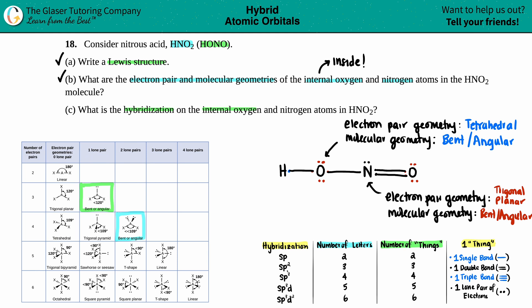SP3, you just tack on another P you got three P's plus one S. So that's a total of four letters. And the number of letters always corresponds with the number of things that are going on around the atom, right? So two letters, two things, three letters, three things, et cetera, et cetera.